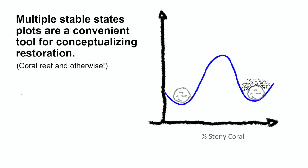I'm going to start with this conceptual diagram — where a lot of the mathy approaches to ecology came from. They started with the assumption that the natural world around us is at equilibria, or returning to equilibria, or progressing towards equilibria, like a healthy reef with lots of coral cover.